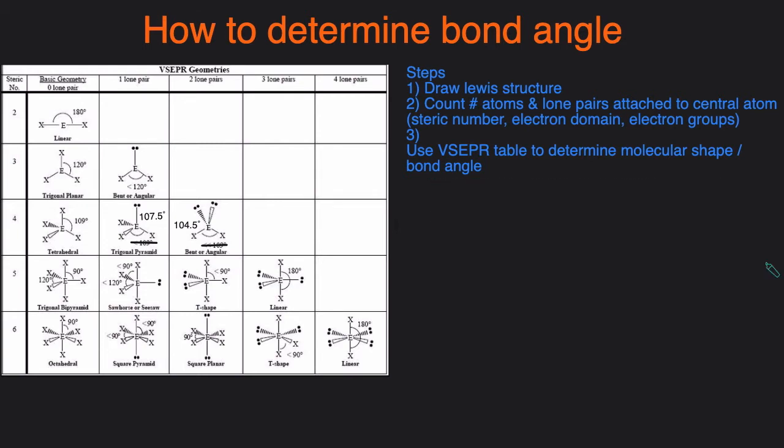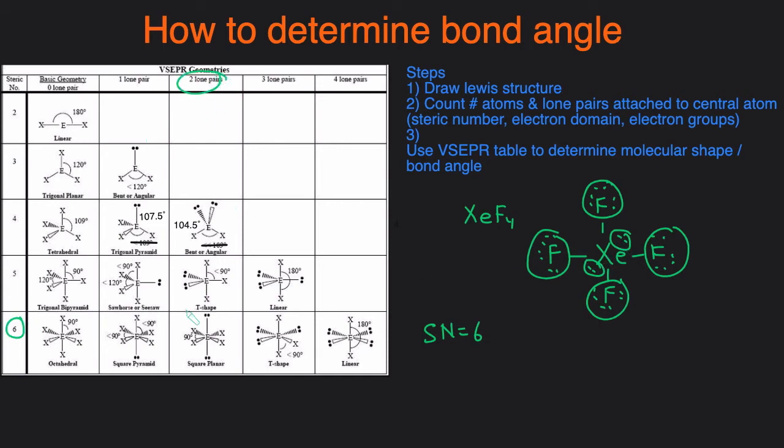Let's take a look at another example, XeF4. Here's the Lewis structure. Then the next step is to determine the steric number. So we're going to count the number of atoms and lone pairs attached to xenon. We have one atom, two atoms, three atoms, four atoms, and the number of lone pairs, five, six. So that means our steric number is six. If we look at six steric number with two lone pairs, that means the shape is going to be square planar, and then that means the bond angle is going to be 90 degrees.